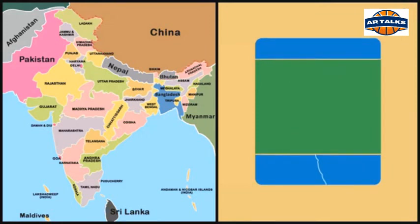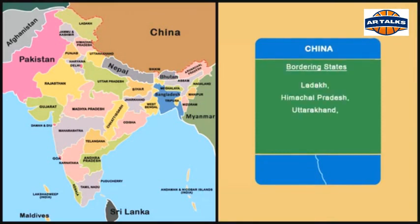The Indian states Ladakh, Himachal Pradesh, Uttarakhand, Sikkim and Arunachal Pradesh share the border with China. The border length is 3,488 km.